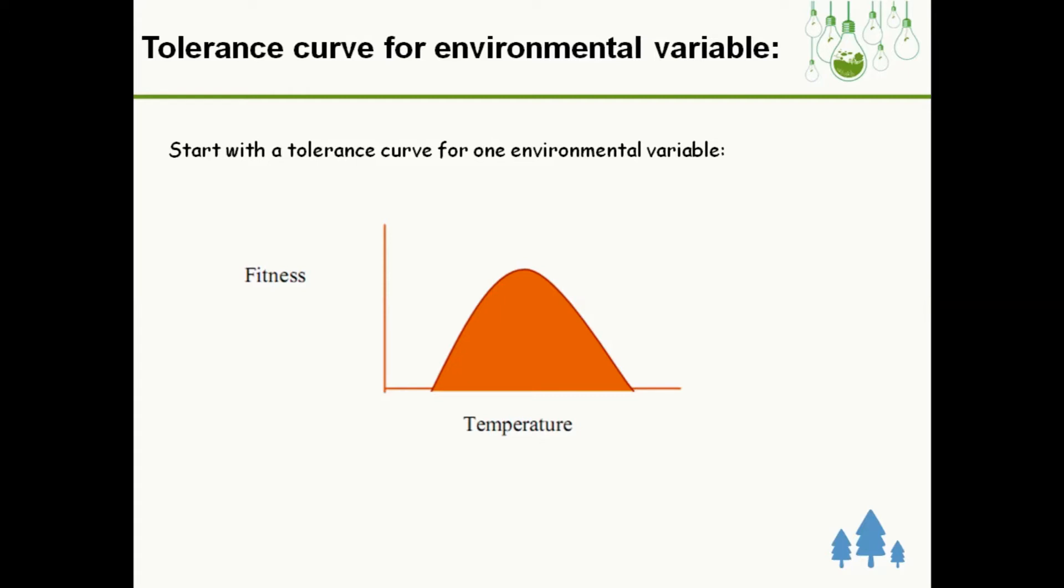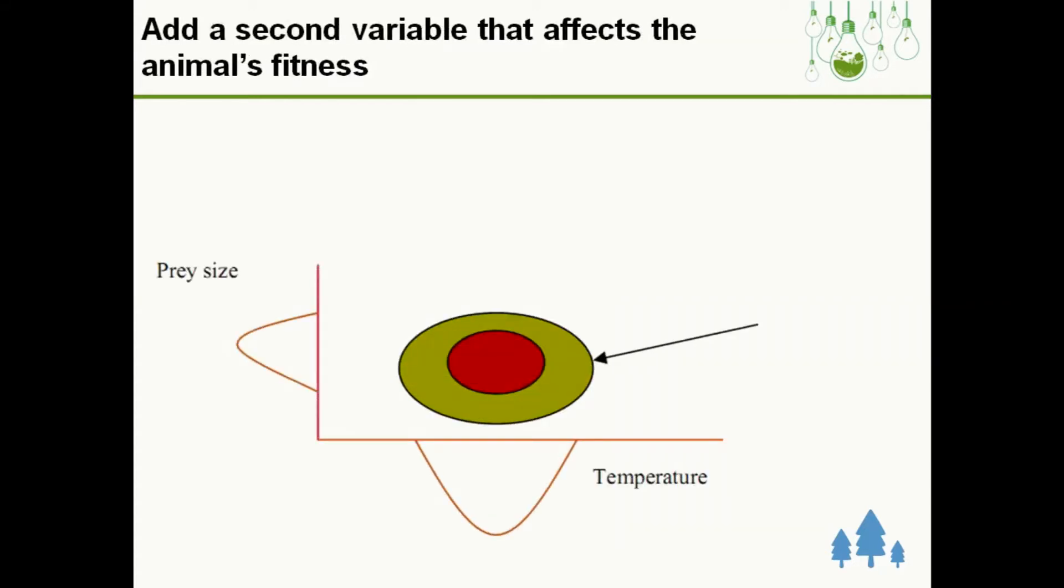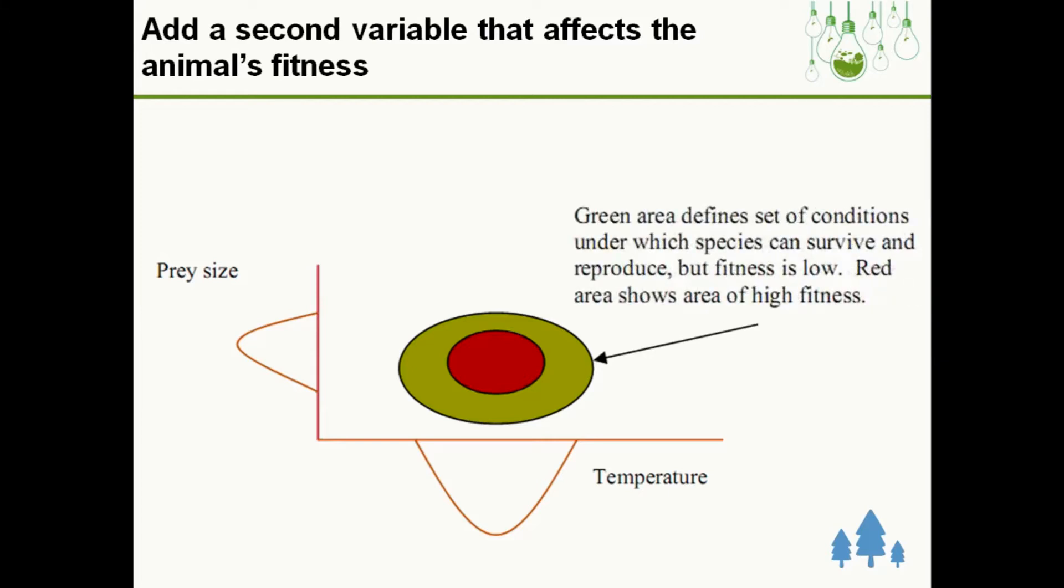If we increase or decrease the temperature, the fitness gradually decreases, and after a certain limit the fitness becomes zero, which is the zone of intolerance. If we add another variable, for example prey size, we can see there are two distinct zones. The green area defines the set of conditions under which species can survive and reproduce but fitness is low, whereas red area shows high fitness zone where the temperature is optimal and it can avoid predation.